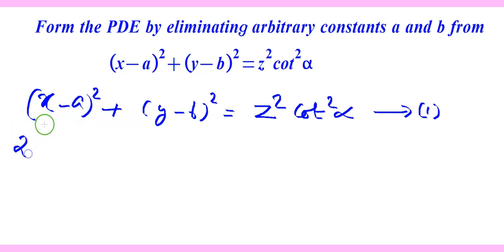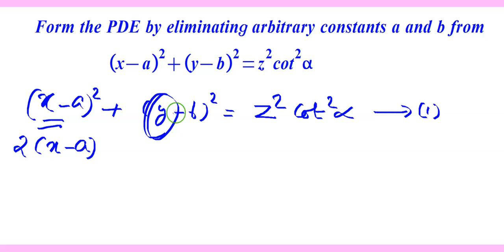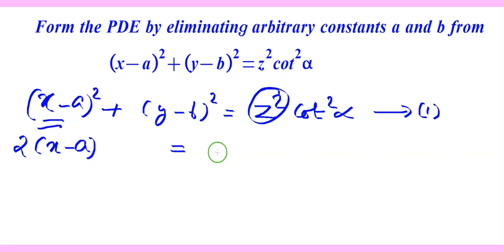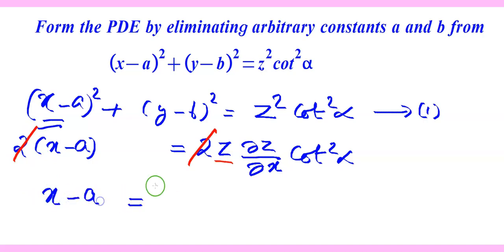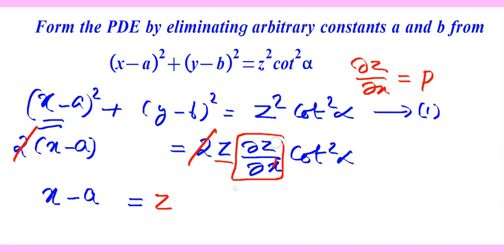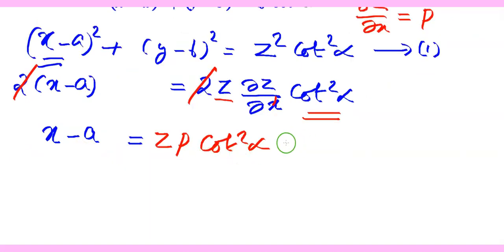Differentiating with respect to x, we get 2(x−a). Since y is constant when differentiating with respect to x, the derivative of (y−b)² is 0. The derivative of z²cot²α with respect to x is 2z·(∂z/∂x)·cot²α. On dividing both sides by 2, we get x−a = z·p·cot²α. Using the notation ∂z/∂x = p, this is equation 2.